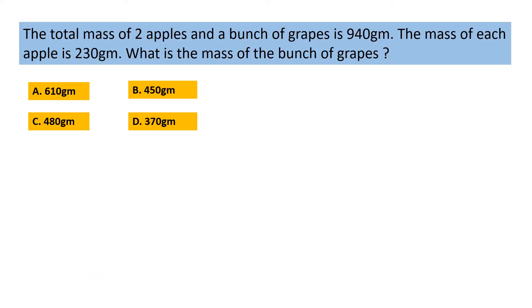The total mass of 2 apples and a bunch of grapes is 940 g. The mass of each apple is 230 g. What is the mass of the bunch of grapes? Option A: 610 g. Option B: 450 g. Option C: 480 g. Option D: 370 g.